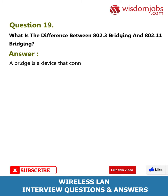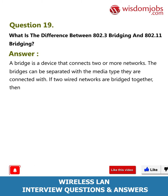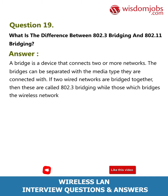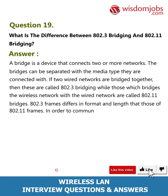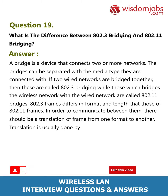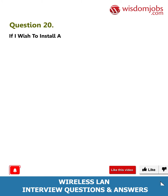Question 19: What is the difference between 802.3 bridging and 802.11 bridging? Answer: A bridge is a device that connects two or more networks. Bridges can be separated by the media type they connect. If two wired networks are bridged together, these are called 802.3 bridges, while those that bridge a wireless network with a wired network are called 802.11 bridges. 802.3 frames differ in format and length from 802.11 frames. In order to communicate between them, there must be a translation of frames from one format to another — this translation is usually done by the access point.